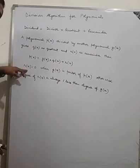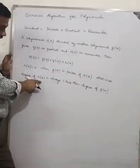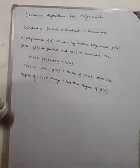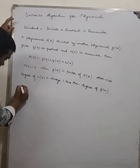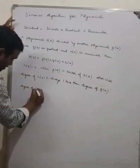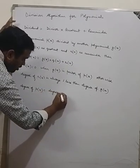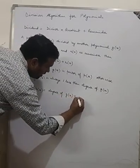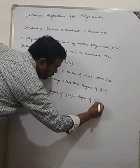When R(x) is 0, it is only 0 when G(x) is a factor of P(x). Otherwise, the degree of R(x) is always 1 less than the Degree of G(x). One more thing in terms of degree: the Degree of P(x) is equal to the Degree of G(x) plus the Degree of Q(x).